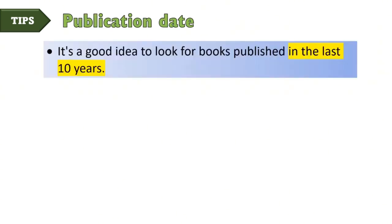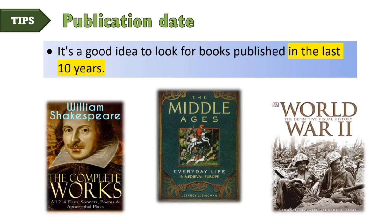Publication date. It's a good idea to look for books published in the last 10 years. On some topics — for example, Shakespeare, the Middle Ages, World War II — it's okay to use books 25 or 50 years old. For a subject that's current, let's say climate change or the internet, a 25-year-old book would be usable only in certain circumstances, like exploring early theories and solutions, or studying the ideas leading up to the most recent thoughts on your topic.